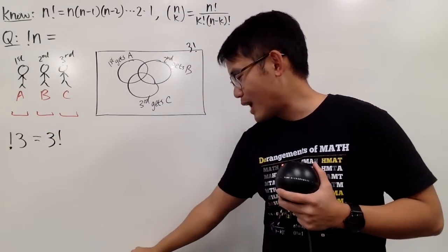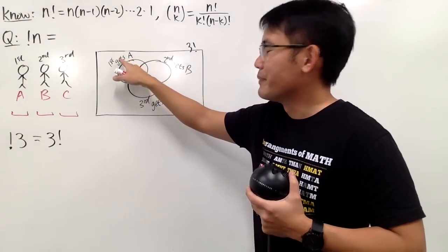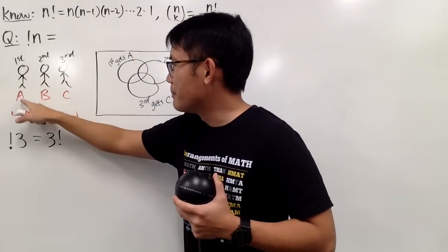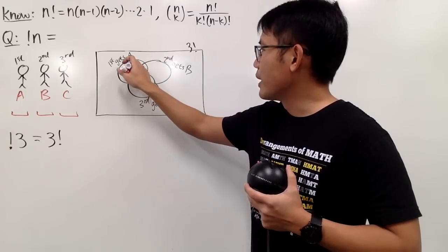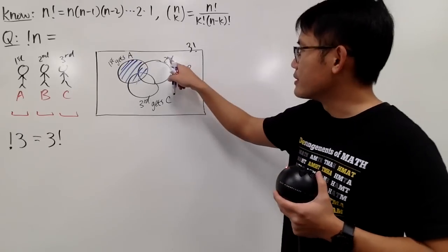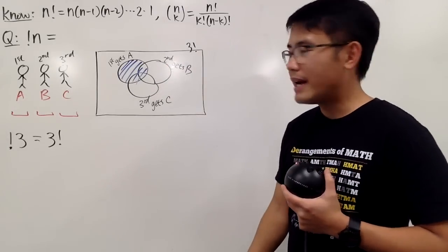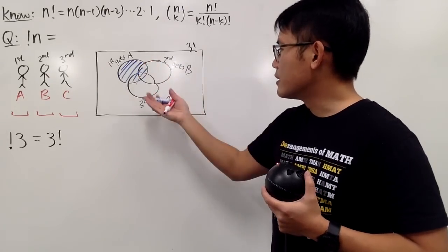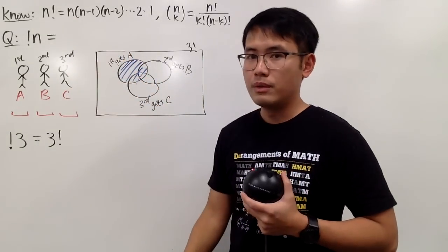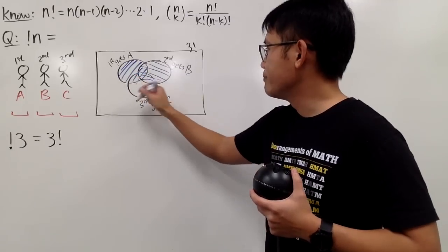But since you care, here is how you are going to handle that. First of all, you have to make sure that the first person — which is you — doesn't get gift A back. So the first person doesn't get back A, and you are going to subtract this. Similarly, you also have to make sure the second person doesn't get back gift B, so you take away that as well. And then you also have to make sure that the third person doesn't get back his or her own gift, so you subtract that portion as well.